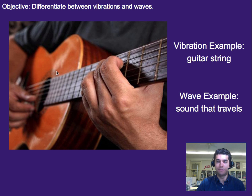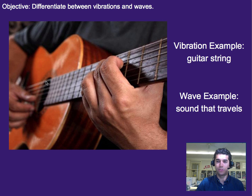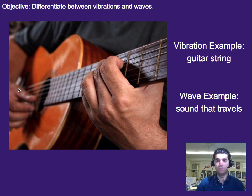To help differentiate between waves and vibrations, here's another example. If you strum on a guitar it makes a sound. The guitar strings themselves are vibrating — meaning they don't go anywhere, they don't travel across the room. They just stay in one spot and vibrate back and forth. However, they do create a sound wave, and as the name hints, that is a wave. So that sound travels from the guitar all the way across the room to your ears and maybe even further.